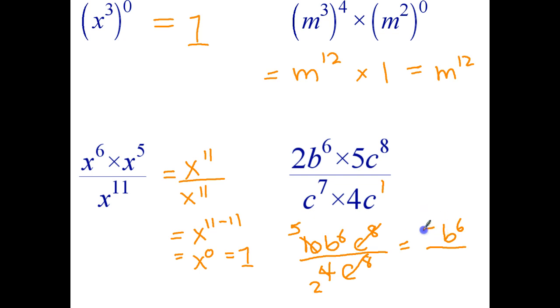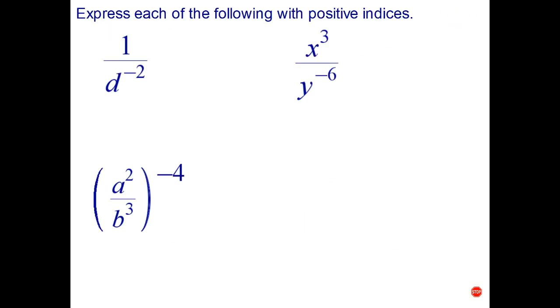And that gives me 5b to the 6 all divided by 2. Okay, let's have a go on the next page. So express each of these with positive indices. We've done similar questions before, so have a go please.